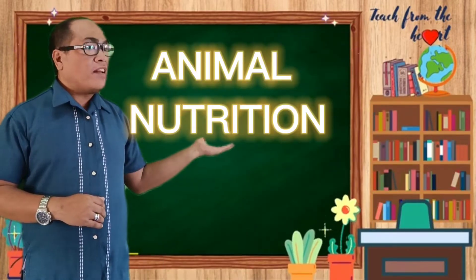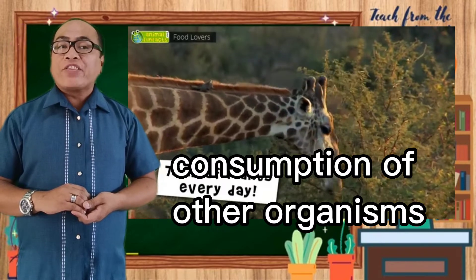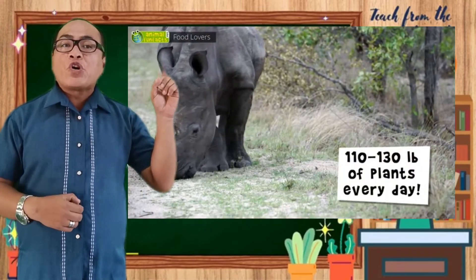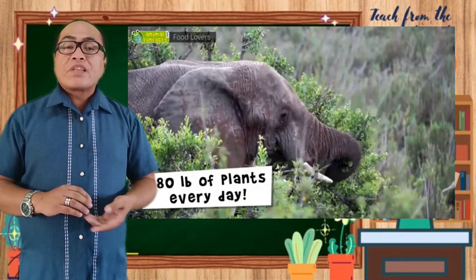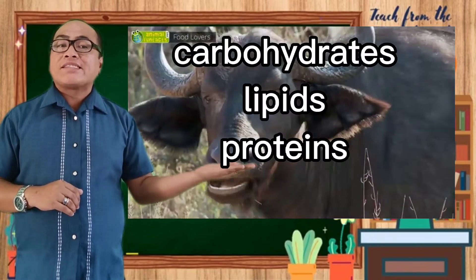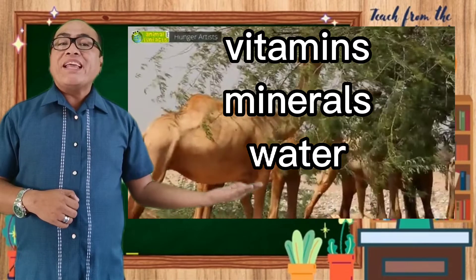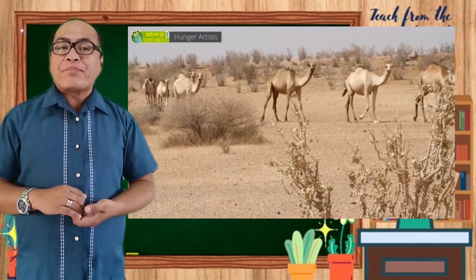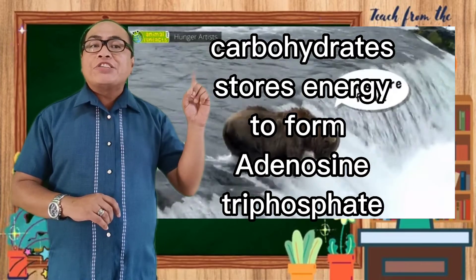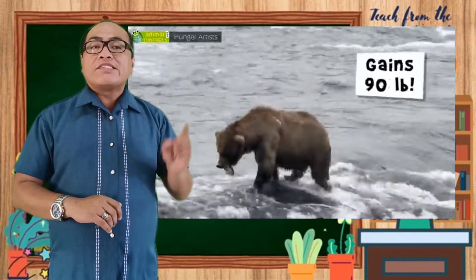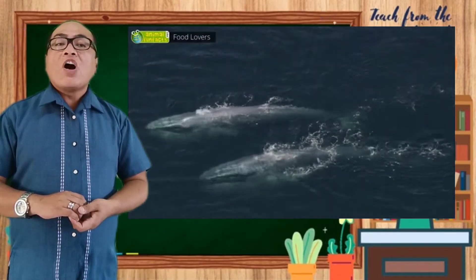We have animal nutrition. Animals obtain their nutrition from the consumption of other organisms. In the course of evolution, animals have developed four ways to obtain, process, and digest food as heterotrophs. Generally, animals need carbohydrates, lipids, and proteins as basic organic compounds, along with a supply of vitamins, minerals, and water as additional requirements. Carbohydrates serve as energy sources from which the energy to form ATP or adenosine triphosphate is derived. Essential fatty acids and amino acids are obtained either from gut symbionts or direct food sources.